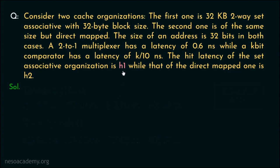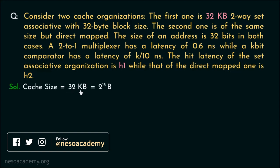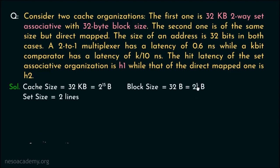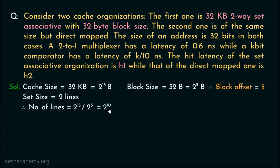Let's find H1 first. The cache size is 32 KB, which is 2^15 bytes. It is a 2-way set associative cache, so the set size is 2 lines. The block or line size is 32 bytes, which is 2^5, giving us 5 block offset bits. The number of lines inside the cache is 2^15 / 2^5 = 2^10. Since the set size is 2 lines (2^1), the number of sets is 2^10 / 2^1 = 2^9.